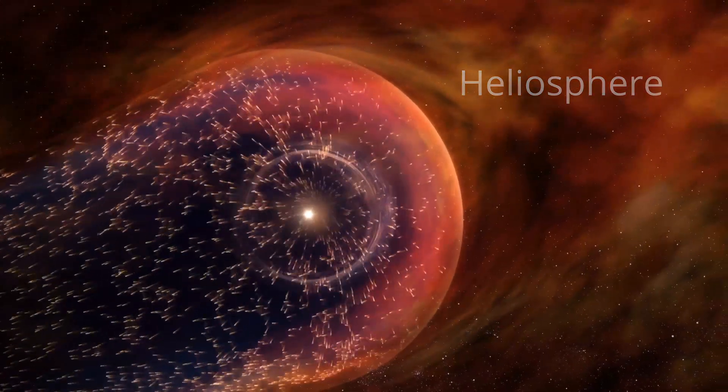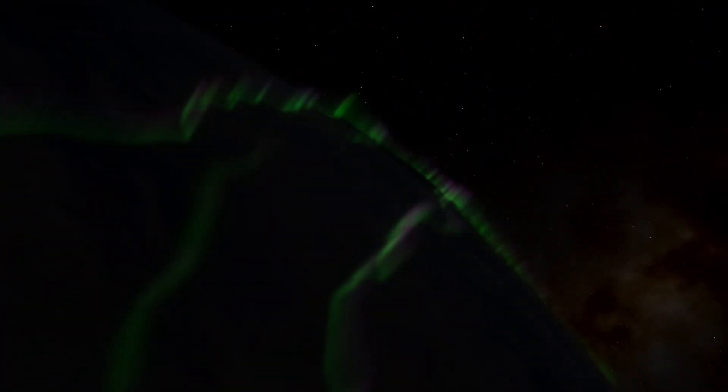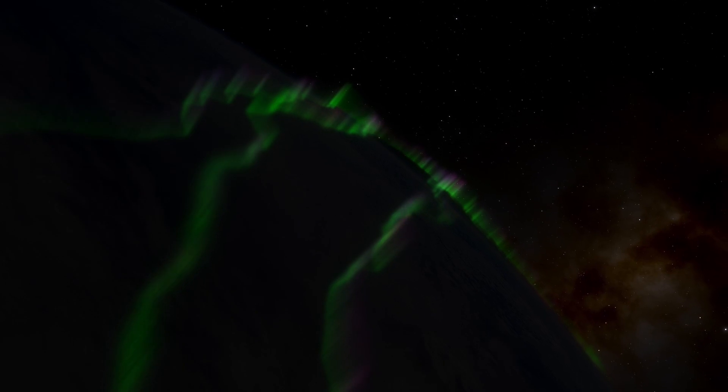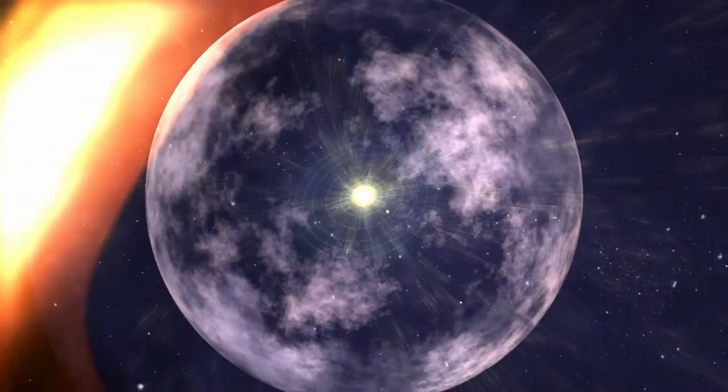And although it has many effects, like creating the aurora borealis here on Earth, one of its main functions is to shield us from radiation coming from the rest of the galaxy.